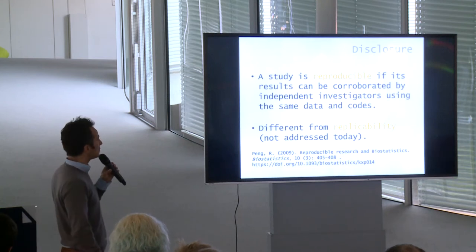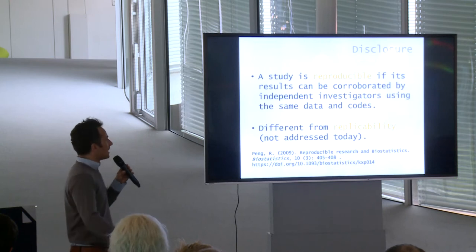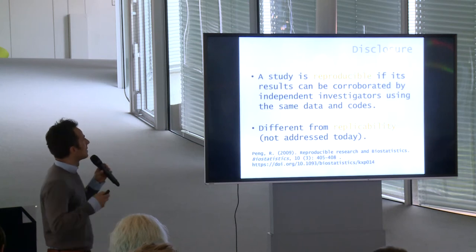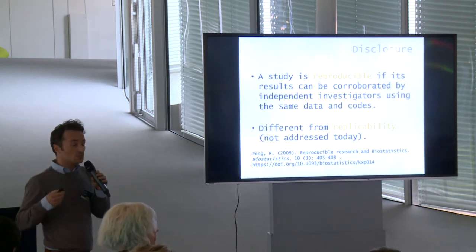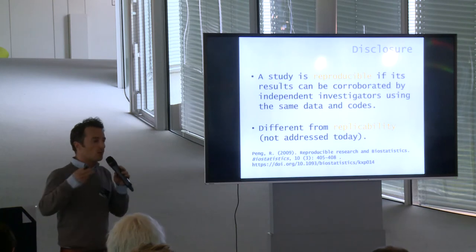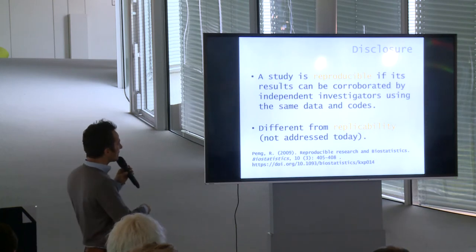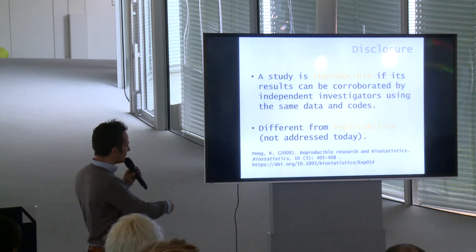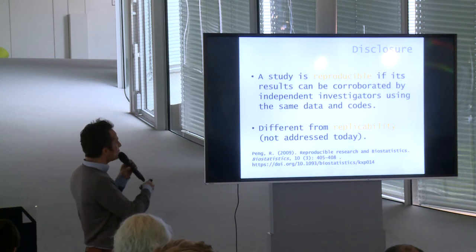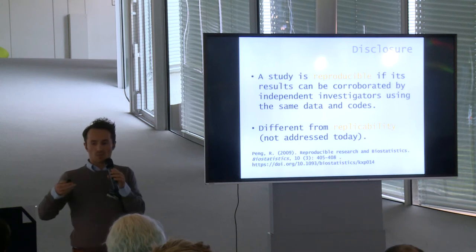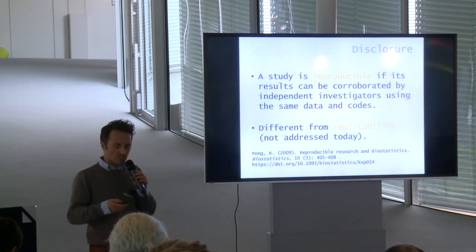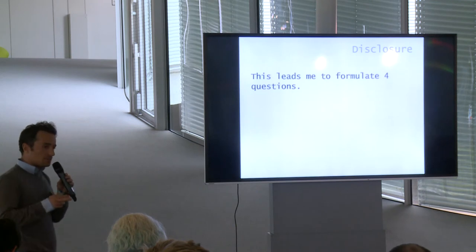I believe reproducibility is a fundamental norm of science. This definition is by Roger Peng: a study is reproducible if its results can be corroborated by independent investigators using the same data and codes. It's related but slightly different from replicability, which is the ability of a study to be corroborated by independent investigators using different datasets and different codes. I will address both reproducibility and replicability. In my experience, there is more research about reproducibility because replicability is even more difficult to achieve.